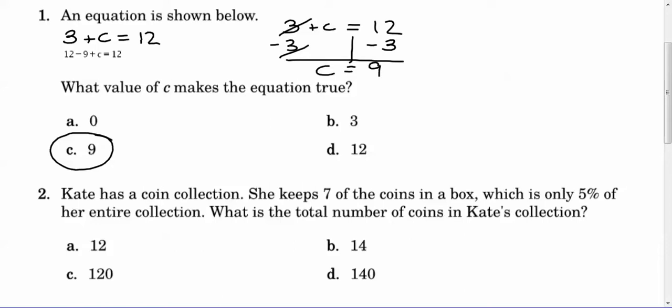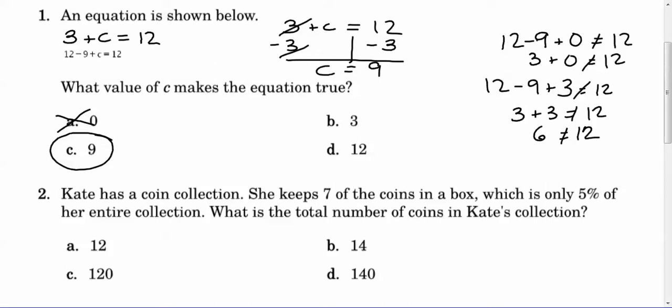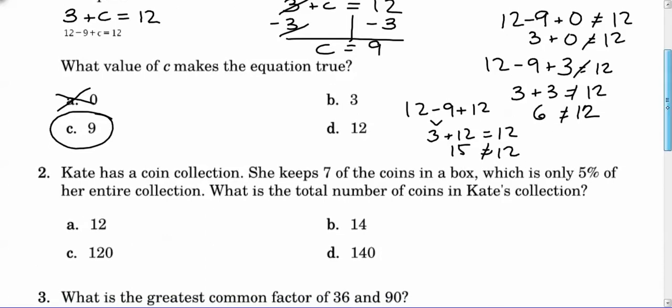Another way you could do this is plug in the value. We could look at this and say 12 minus 9 plus 0. Does that equal 12? Well, that gives you 3 plus 0, which does not equal 12. So we know that is a bad answer. If you tried choice B, 12 minus 9 plus 3, that's 3 plus 3, which equals 6, not 12. The last one, if you did 12 minus 9 plus 12, you would get 3 plus 12, which is 15, not 12. So the only answer that would work is 9. That's question number 1.